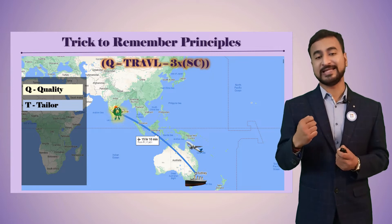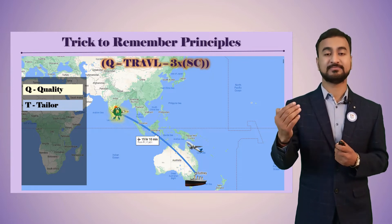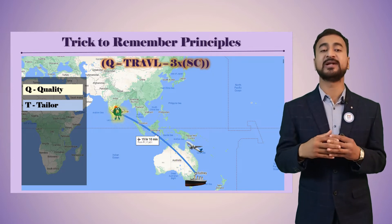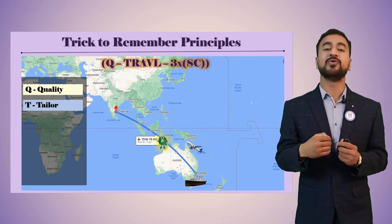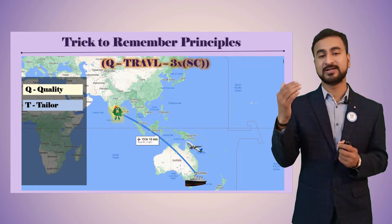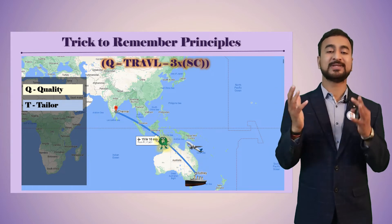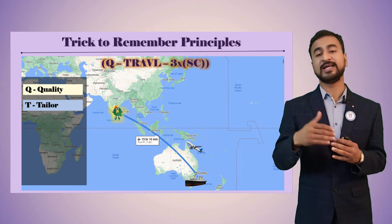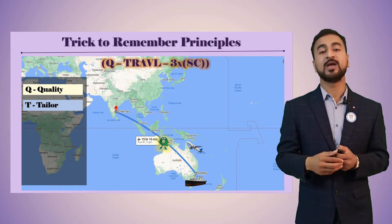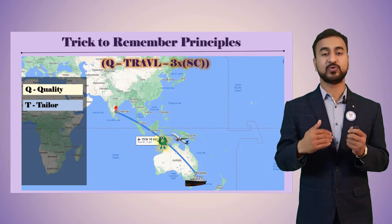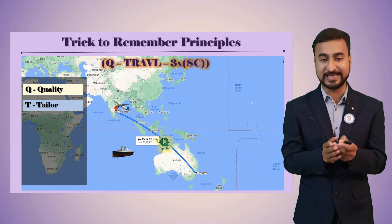The second letter T stands for Tailoring. Tailoring is the principle related to the organizational context — how you tailor the processes and other things. Based on the requirement, Mr. Q has two options available: he could take a flight or take a ship to reach from source to destination.